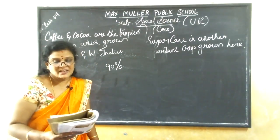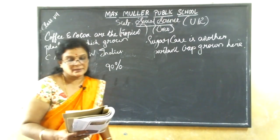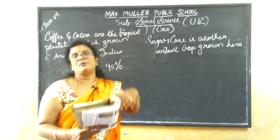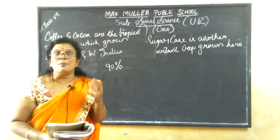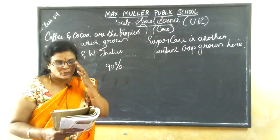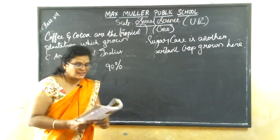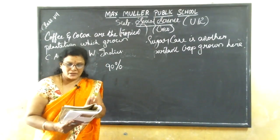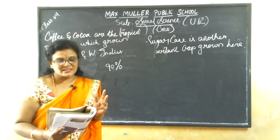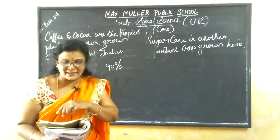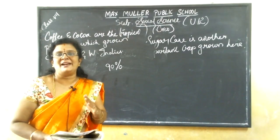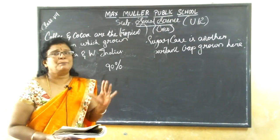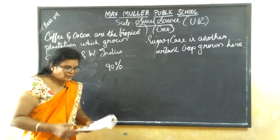The shallow continental shelves such as Grand Banks, Georgia's Banks of New England, and Newfoundland coasts are popular fishing grounds.